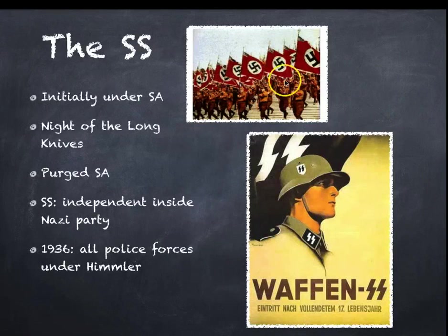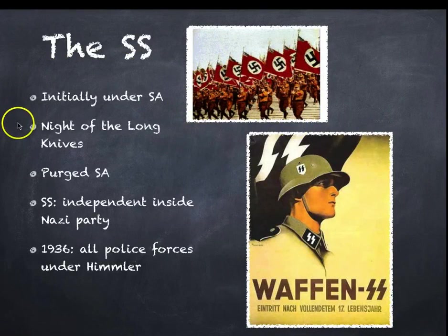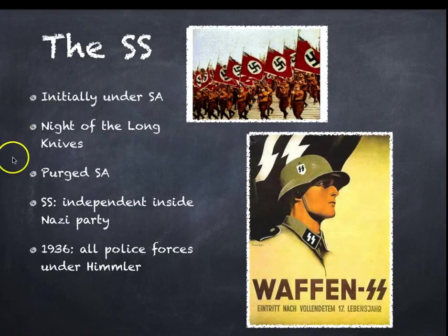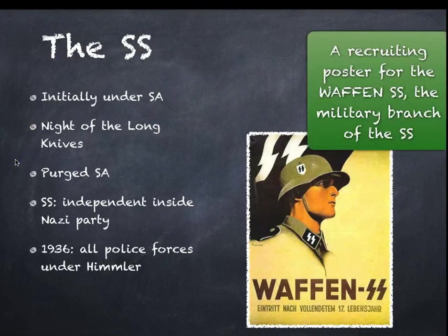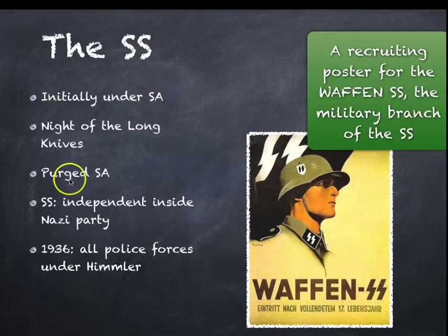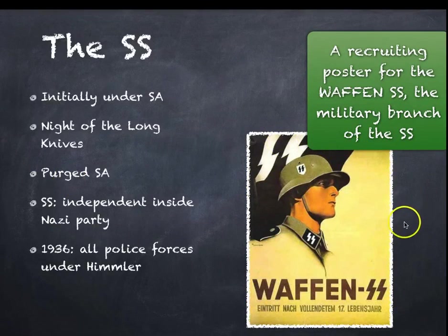Initially the SS were under the SA, the brown shirt stormtroopers. But after the Night of the Long Knives, when Ernst Röhm and other potential obstacles to Hitler were murdered in the purge of the SA, it was the SS that carried that out. They were rewarded for their loyalty. The SS grew to be a massive organisation, almost a state within a state inside the Nazi party, even including entire army divisions given the best training and equipment.